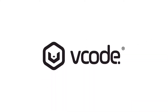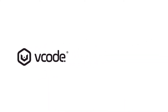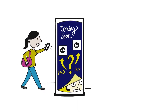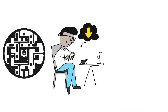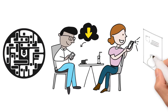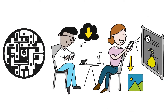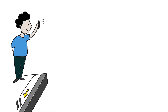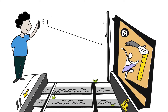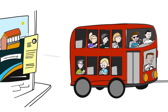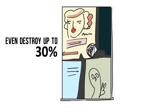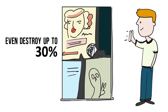Vcode allows any user to gain information in an instant and while on the move. By downloading the Vcode app to a smart device, a user simply scans a secure Vcode using their device's camera. A Vcode can be scanned from great distances, from almost any angle, on and from moving objects, on all media screens. You can even destroy up to 30% of it and it will still scan.